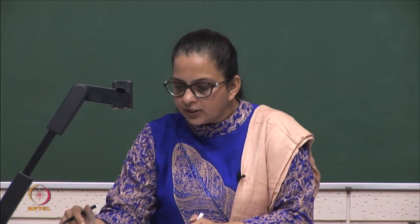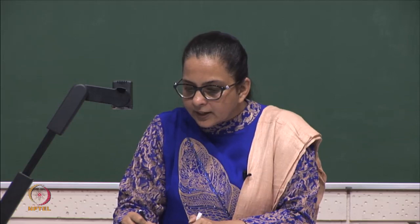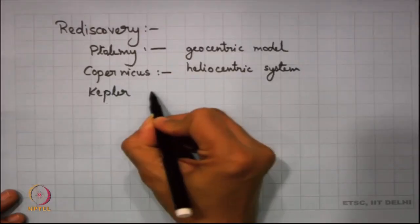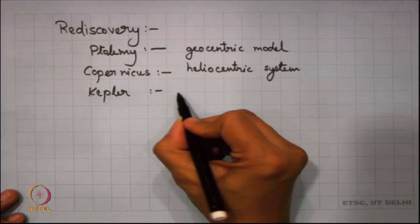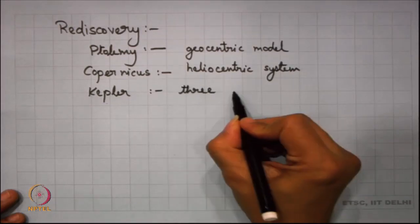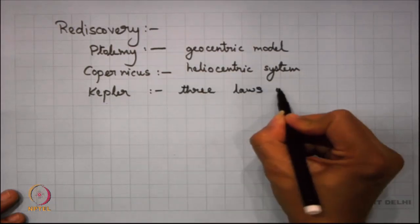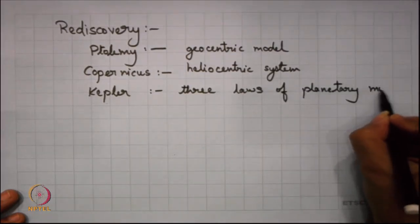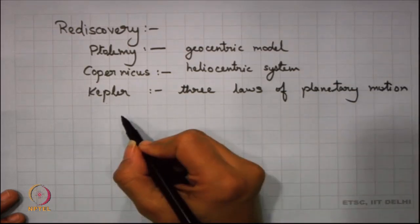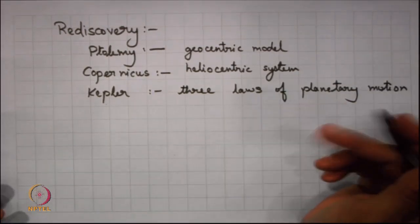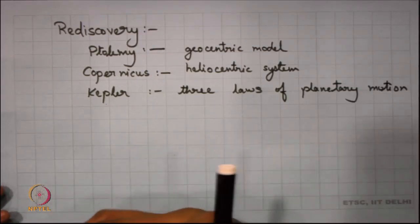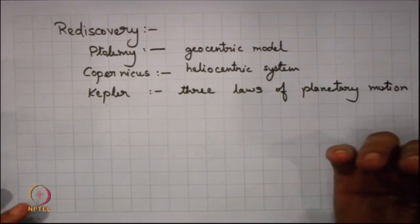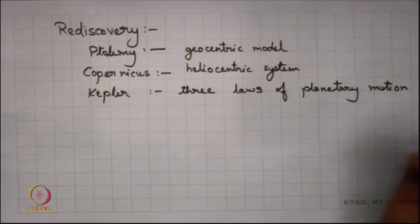But all that happened in the 14th and 15th century. But later Kepler gave his three laws of motion. So he proposed his three laws of planetary motion and that was way back in 15th century. Now Kepler suggested the elliptic motion for planets, which was already known to the ancient Hindus right in the 5th century, the 5th, 6th century.